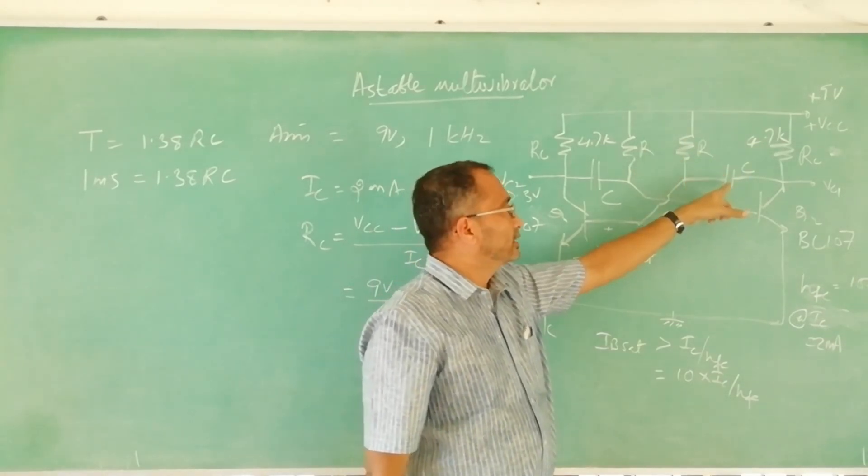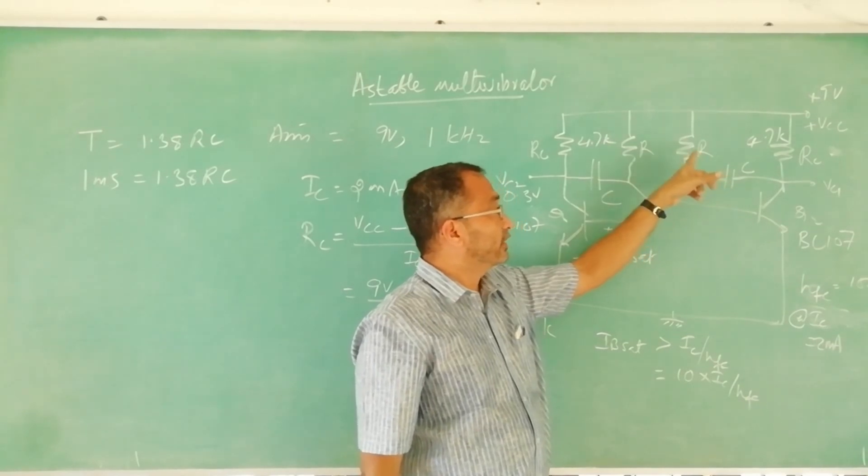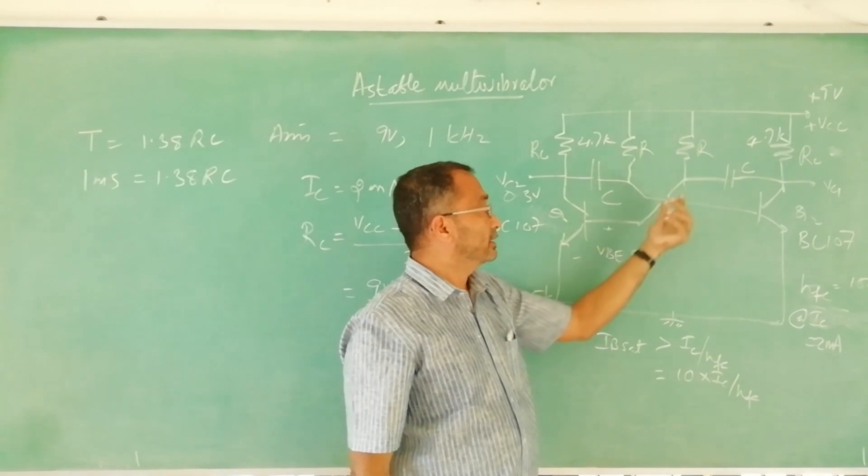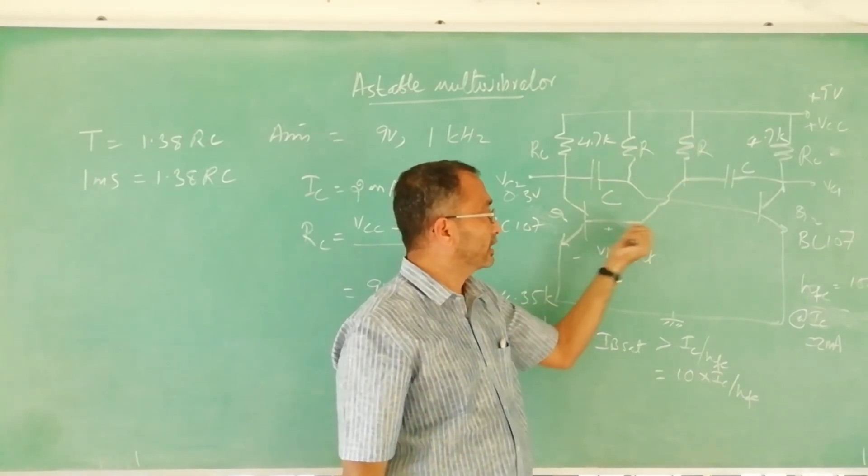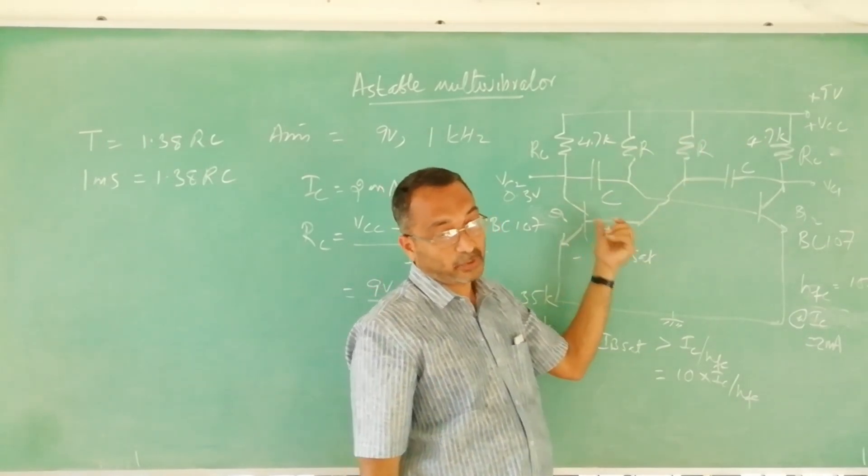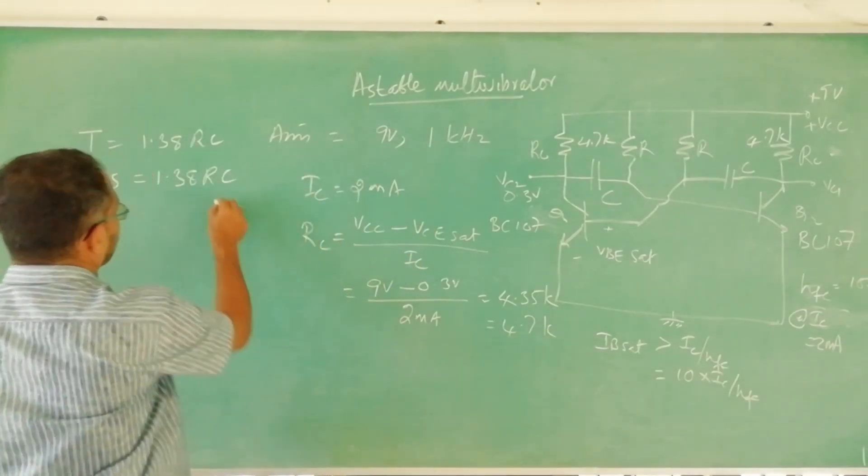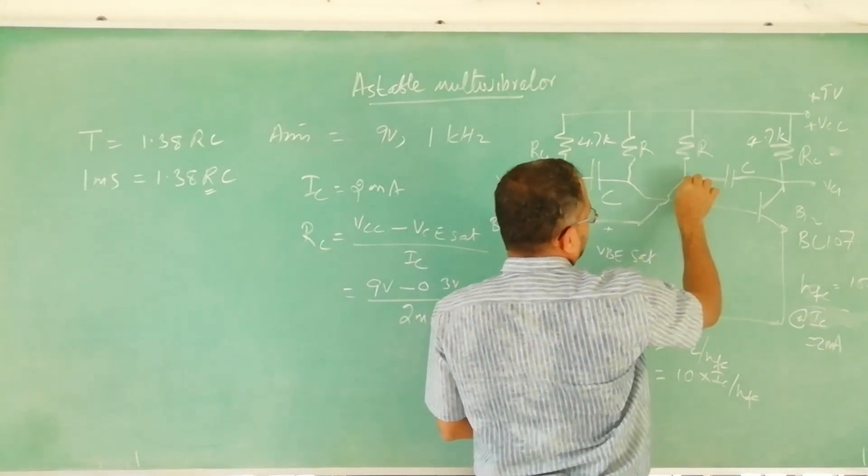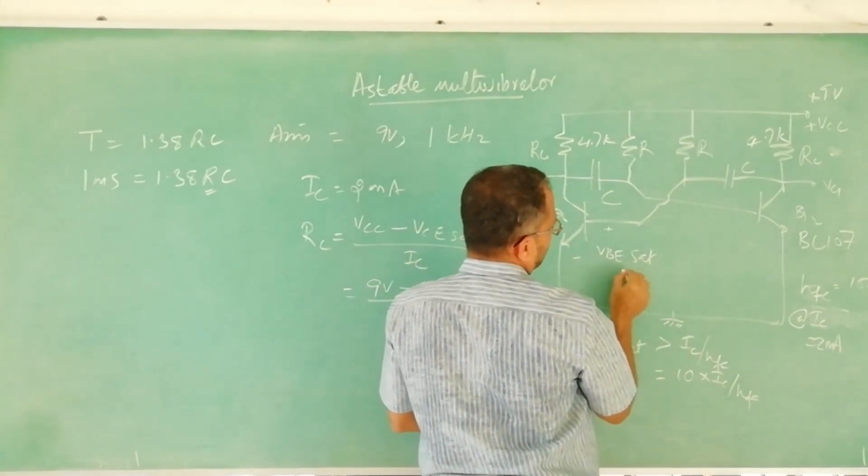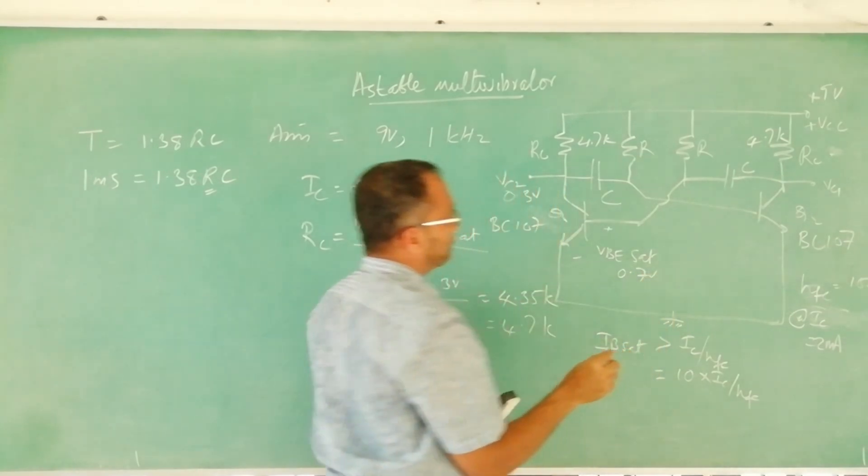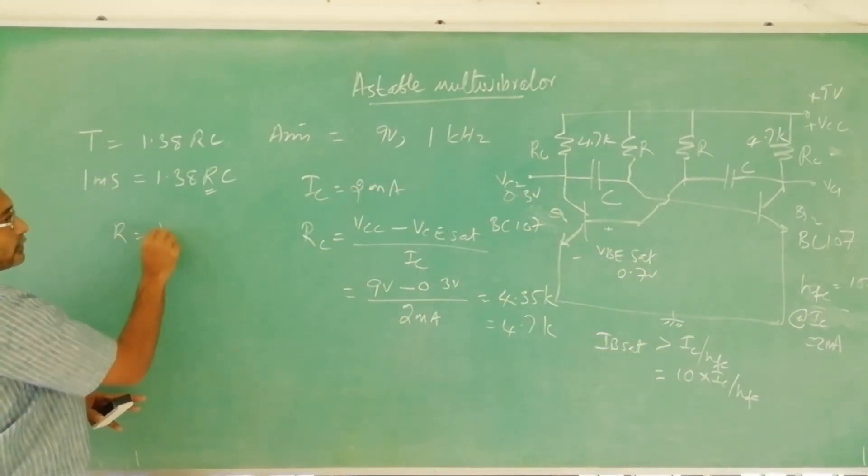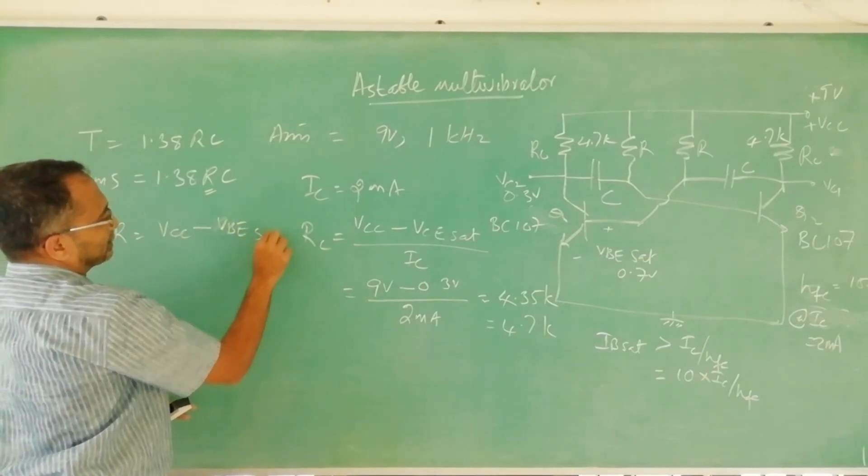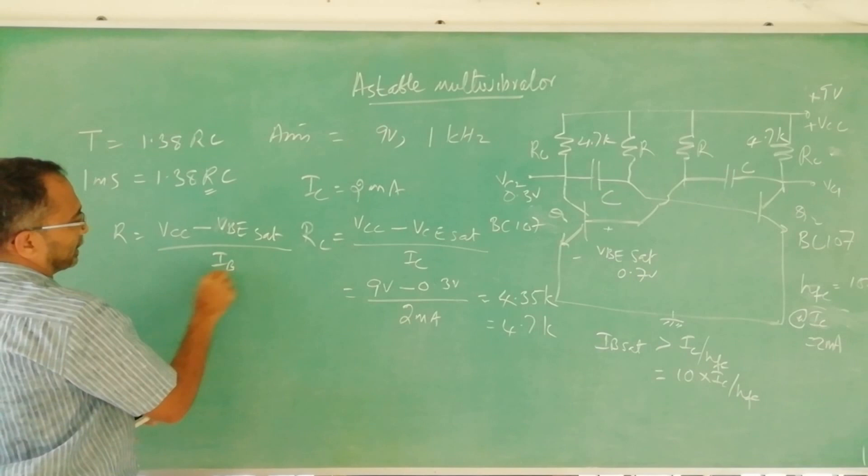If you do in the other way around, if you select C then if you try to find R sometimes R will be either very low or very high. If it is very high then this will not have sufficient current flowing. This is the problem. So first we will find R using Ohm's law. Potential at this point is about 0.7 volt. R is equal to VCC minus VBE sat by IB.